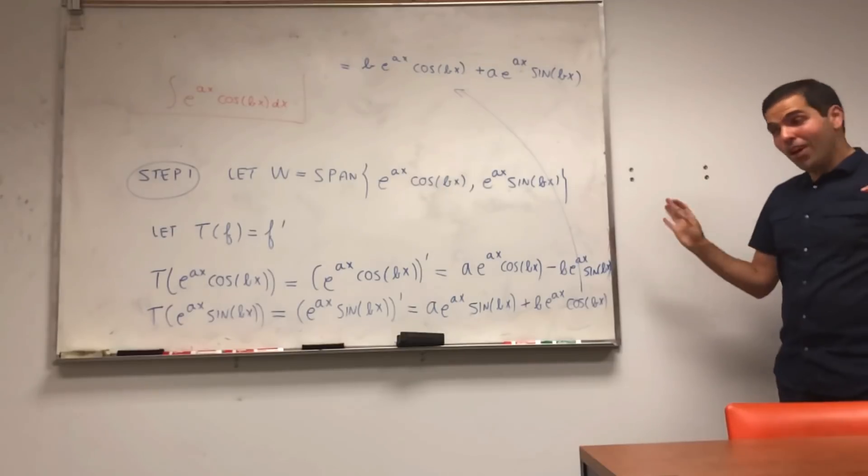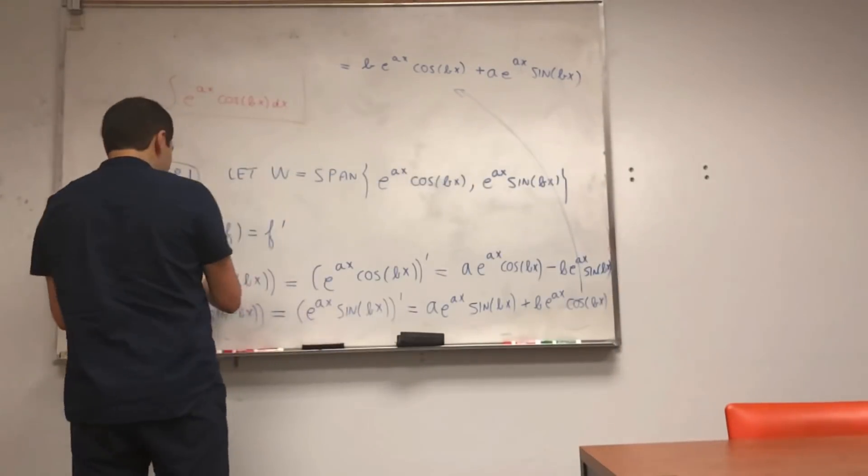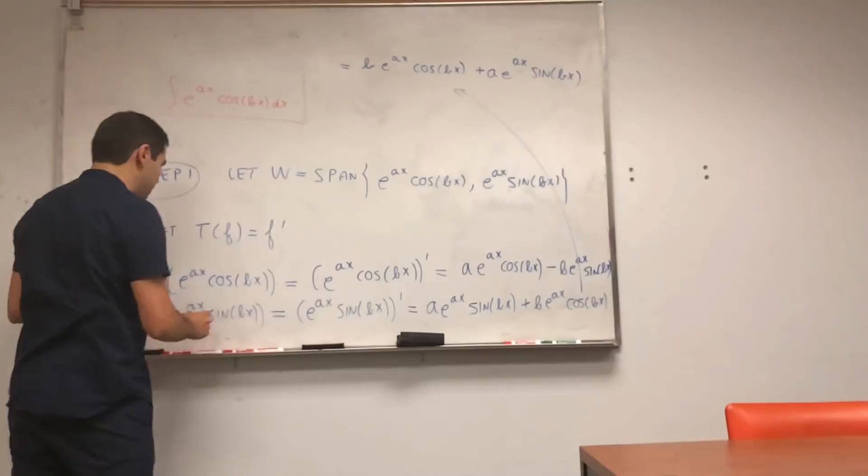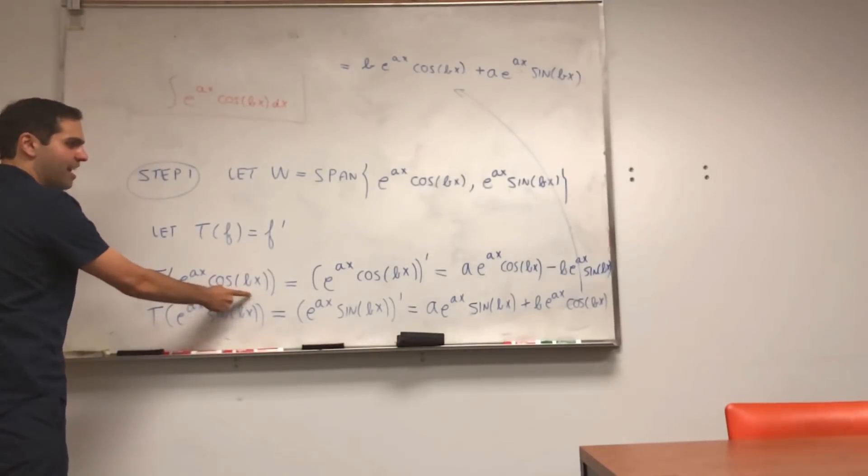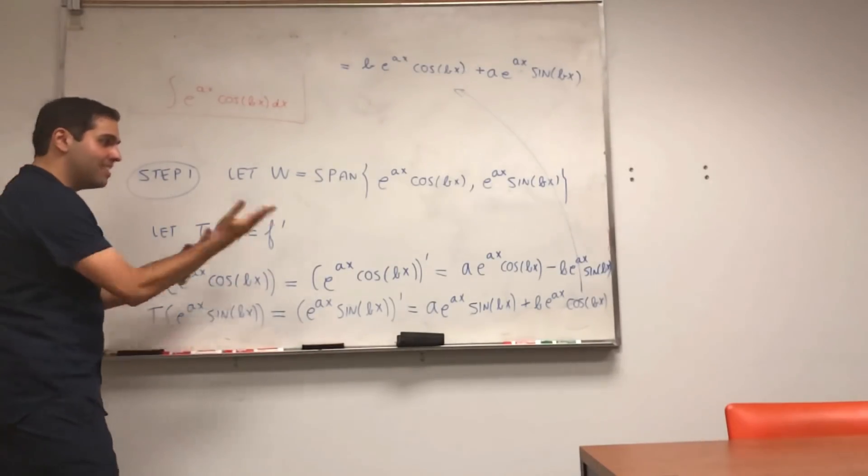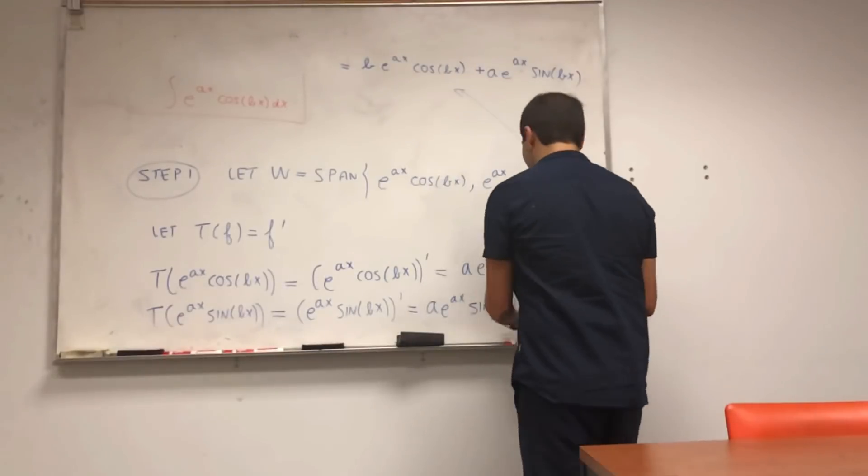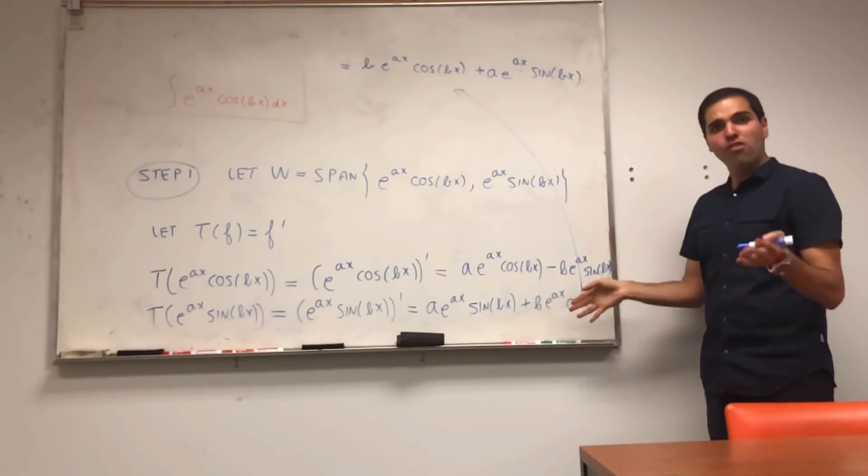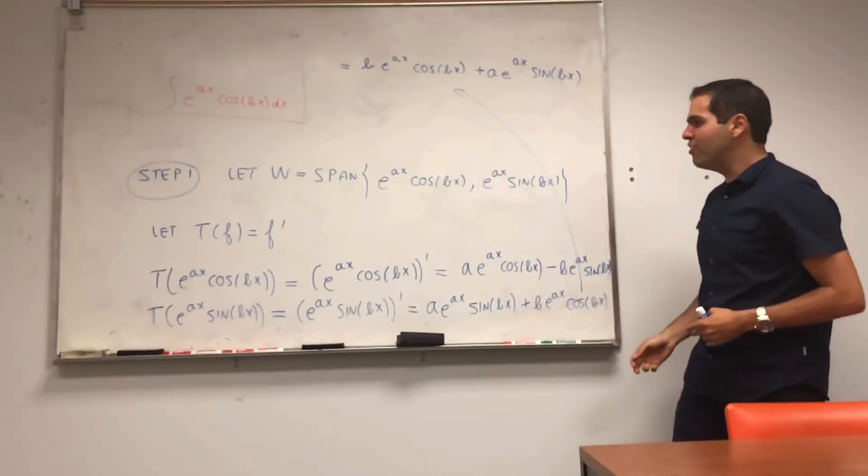So what have we found? We found that in fact, if you apply t to those two basis vectors e to the ax cosine of bx, it's still a linear combination of those basis vectors.